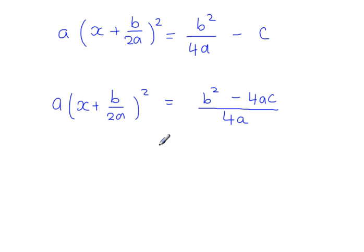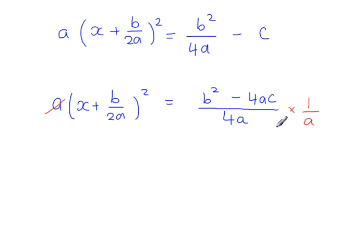And now I'm going to divide both sides by a. So if I divide the left-hand side by a, the a cancels. And dividing the right-hand side by a, that's like multiplying by 1 over a, so that a there multiplies the denominator. So I can get rid of this.